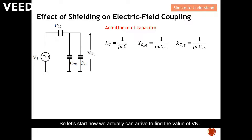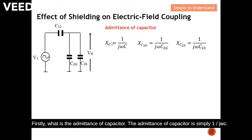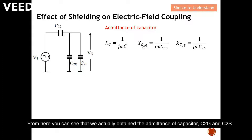Firstly, what is the admittance of a capacitor? The admittance of a capacitor is simply one over jωC. From here you can see that we obtain the admittance of capacitor C2G and C2S.